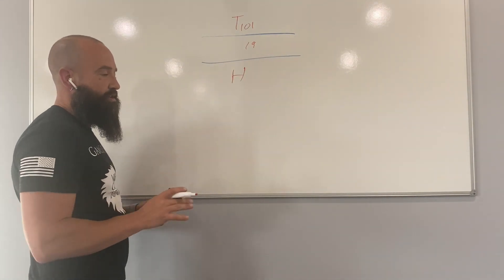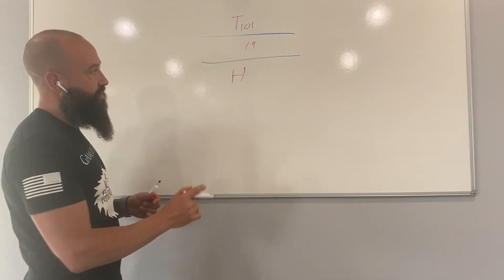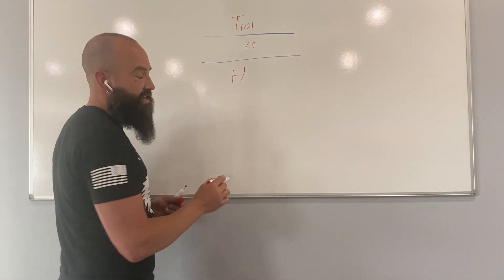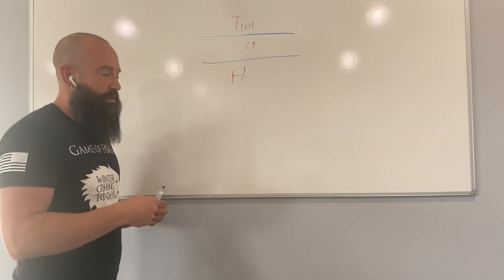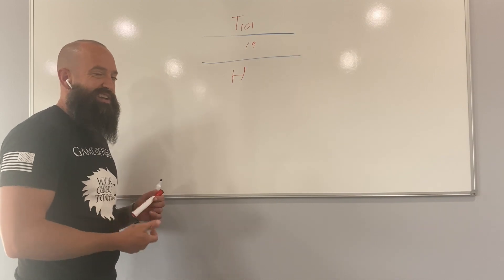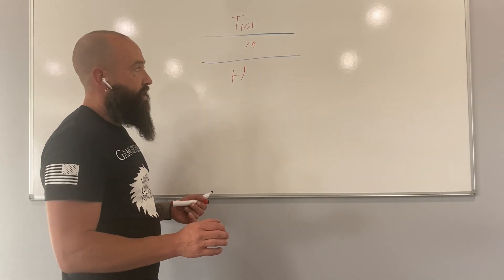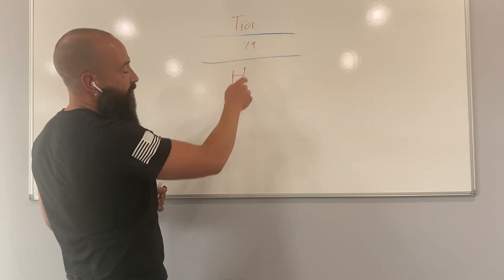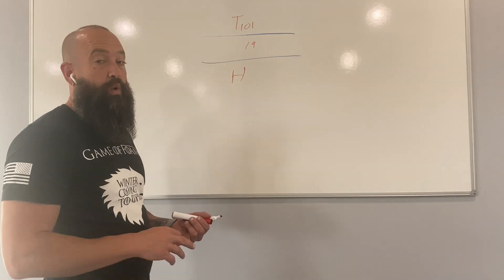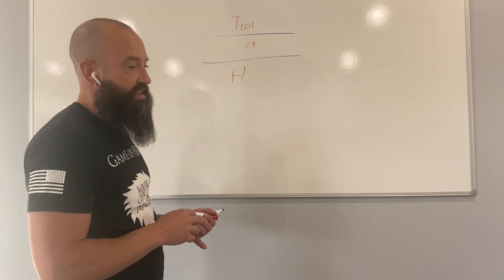The thing they don't tell you is how long it takes for the insulation to become thermally saturated. Fiberglass will become thermally saturated in about two to three hours and spray foam, the same R value will take nearly 24 hours for it to become thermally saturated.